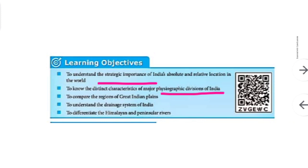India has the Himalayan mountain, northern great plains, peninsular plateau, deserts, and islands - Andaman and Nicobar Islands as well as the Lakshadweep Islands. The great Indian plains, otherwise called the northern plains, is a fertile area through which the Ganga, Yamuna, and Brahmaputra rivers flow.